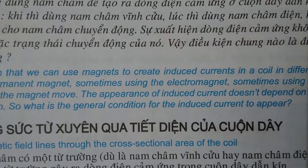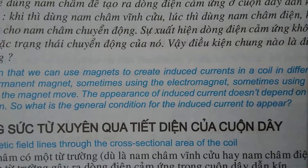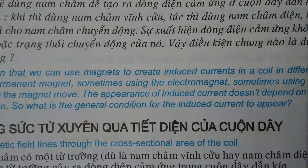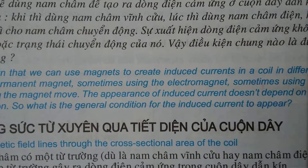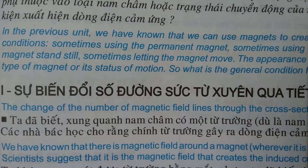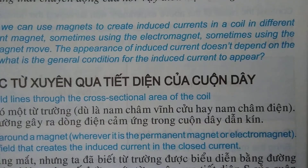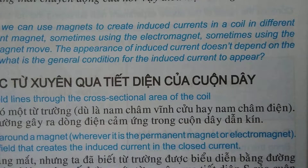So what is the general condition for induced current to appear? The answer involves the change of the number of magnetic field lines passing through the cross-sectional area of the coil.